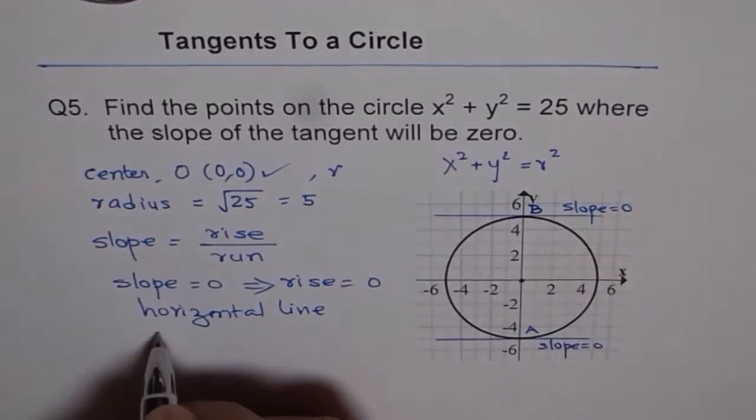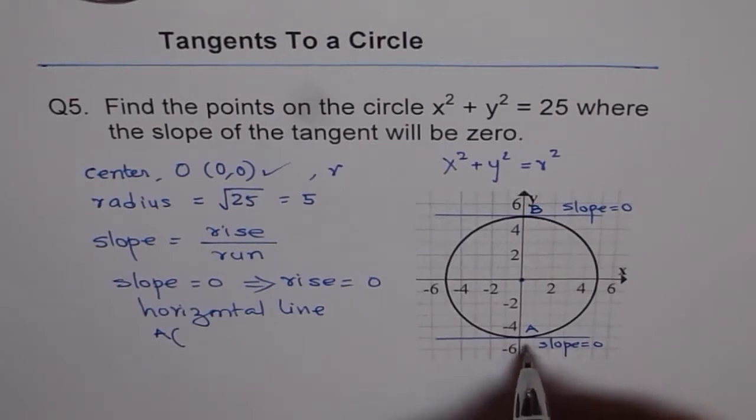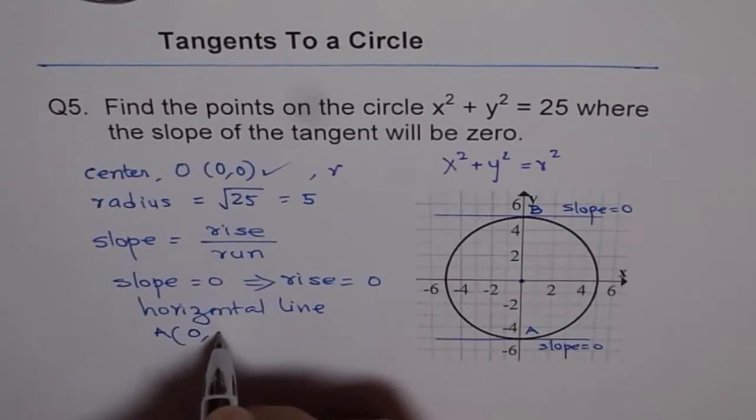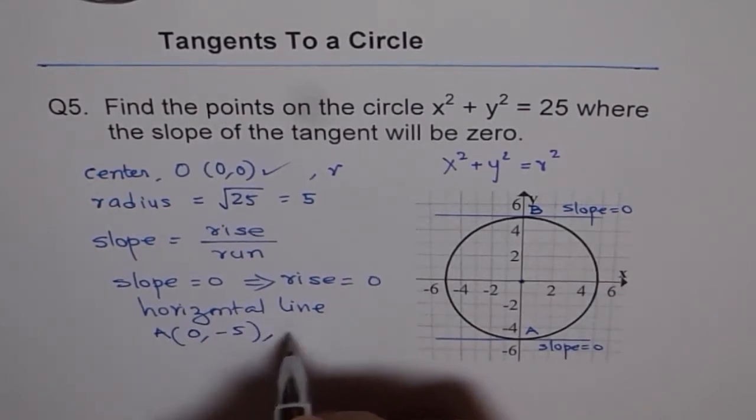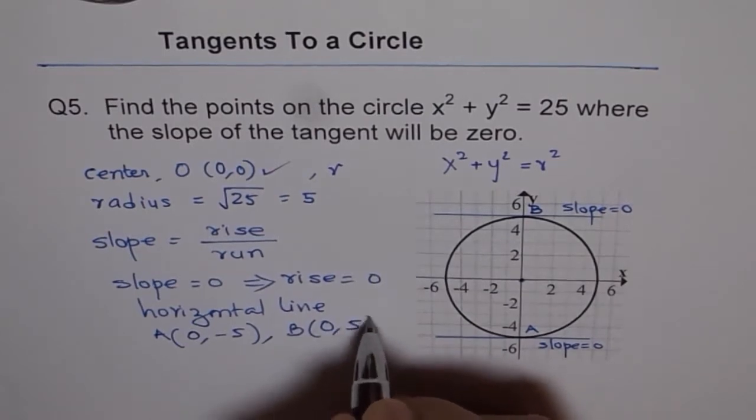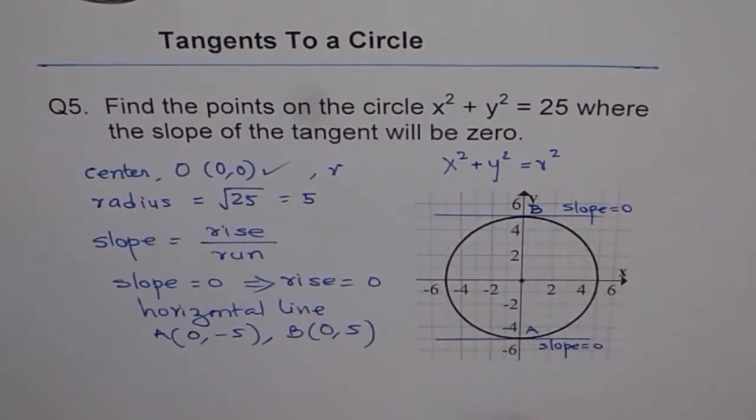So the coordinates of point A for me are minus 5 is the y value and 0 is the x value. So I'll write 0 and minus 5. And for B, it is 0 and 5. So these are the two points on our circle where the slope is going to be 0.